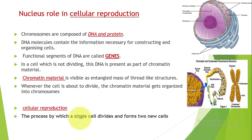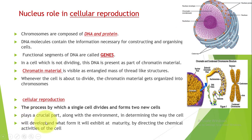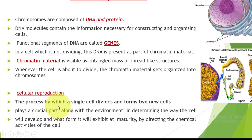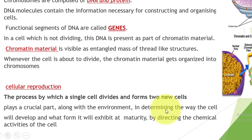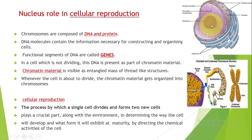Now let's understand the structure and function of the nucleus. Inside the nucleus there is thread-like chromatin, and just before cell division it organizes into chromosomes, which are the information centers containing DNA. The genes present in DNA contain all information. Nucleus plays a very crucial role in cellular reproduction. Along with the environment, it determines how a cell will develop and what form it will exhibit at maturity by directing the chemical activities of the cell.